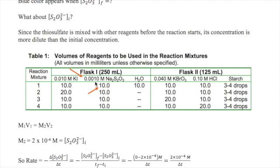That's actually not the initial concentration of thiosulfate. The reason is because the thiosulfate must be mixed with other reagents before the reaction, which therefore dilutes the concentration of the thiosulfate. So to calculate the initial concentration of thiosulfate, we must first use the dilution equation, which is M1V1 equals M2V2. Substituting all these values, we will get M2 equals to 2 times 10 to the minus 4 molar. And that's the initial thiosulfate concentration.